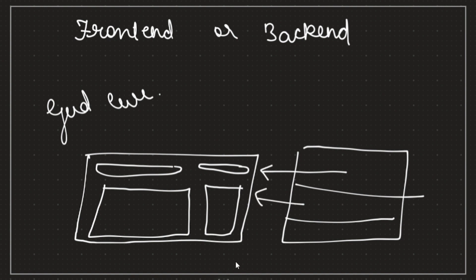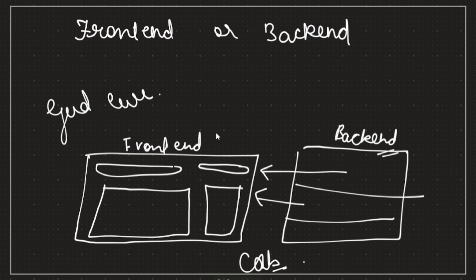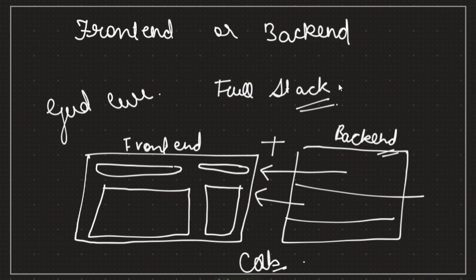A good example is when we book a cab. The cab's location, whether it's available or not — all of that runs in the backend, managed from the backend database, and is sent to the frontend. The interface we see, where we can book a cab and click buttons — all of that is the frontend. And if someone knows both frontend and backend and does both, we call them a full-stack web developer.